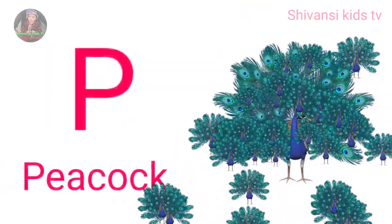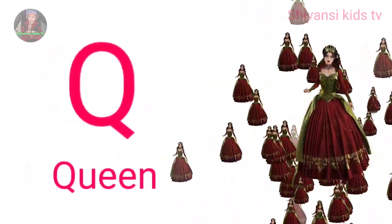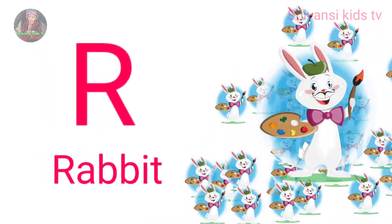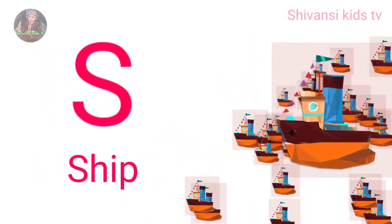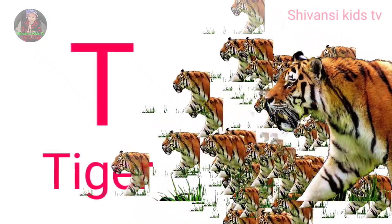P for peacock, Q for queen, R for rabbit, S for sheep, T for tiger.